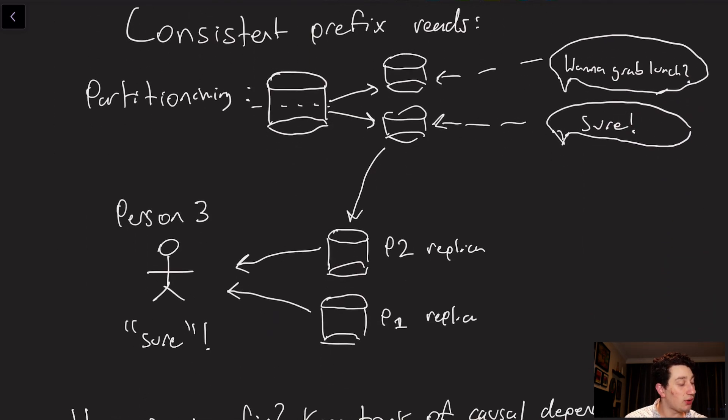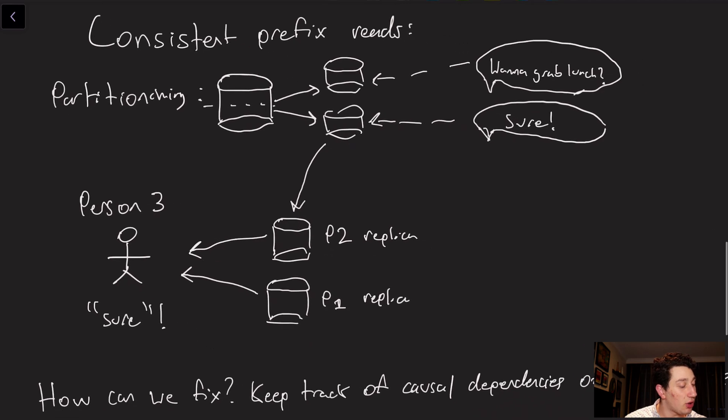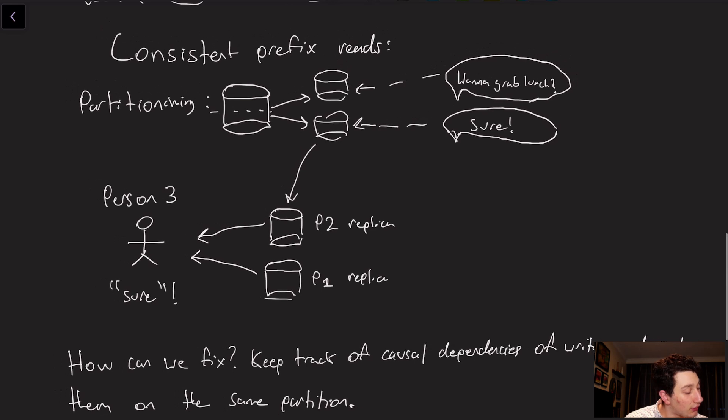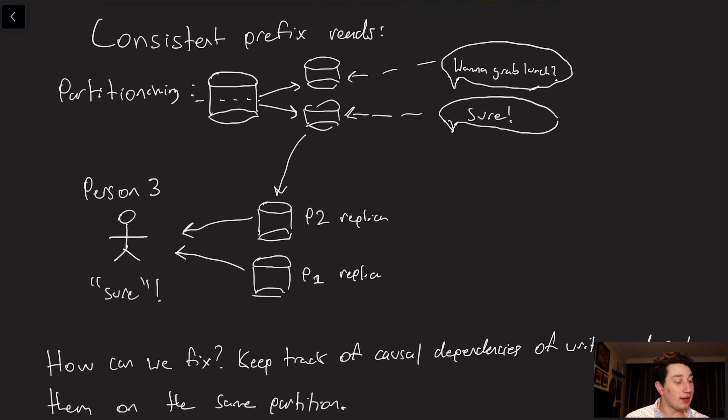Okay, then the last kind of edge case that we want to talk about is actually going over something known as consistent prefix reads. So for me to talk about this, I suppose the first thing we should do is talk about something called partitioning. So partitioning is a topic that I will be covering in depth on this channel in probably five or six videos. But for now, I'm going to make things very simple. Let's say we've got one database which is super big. Rather than storing all the data in that one table, let's split it into two mini tables that are on different computers.